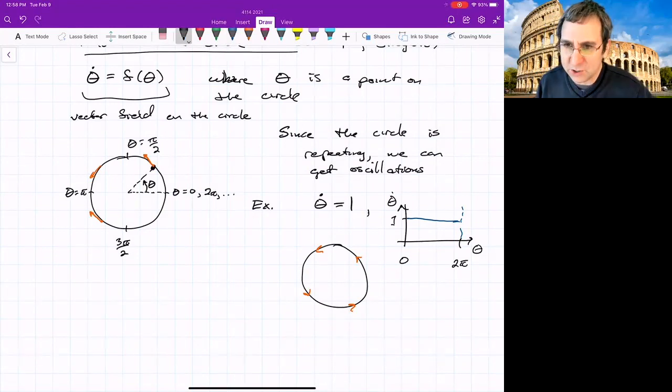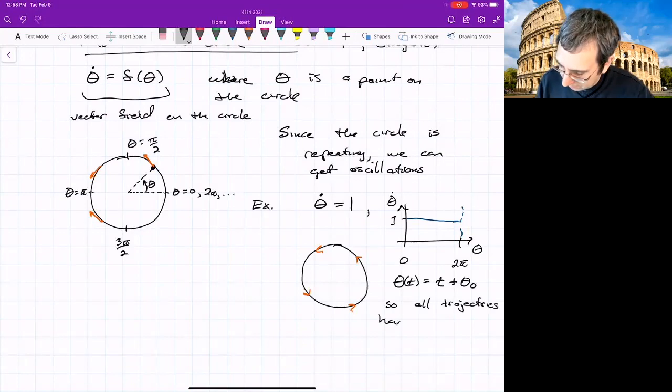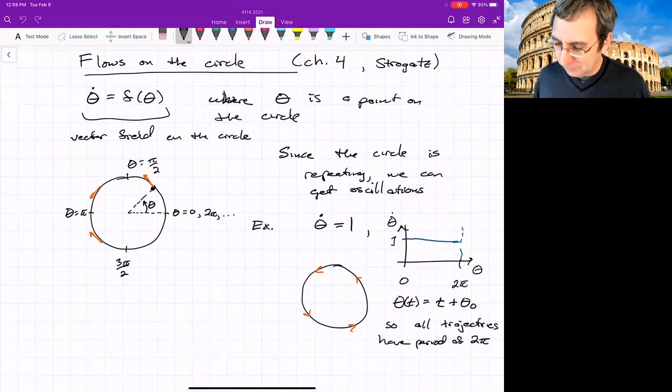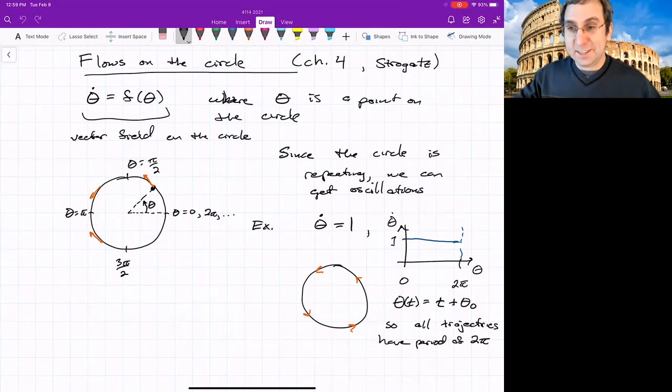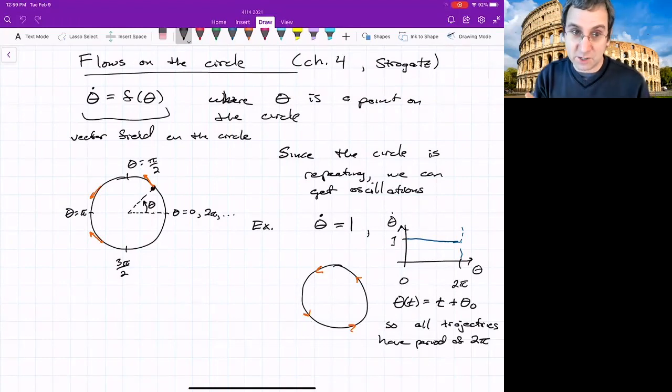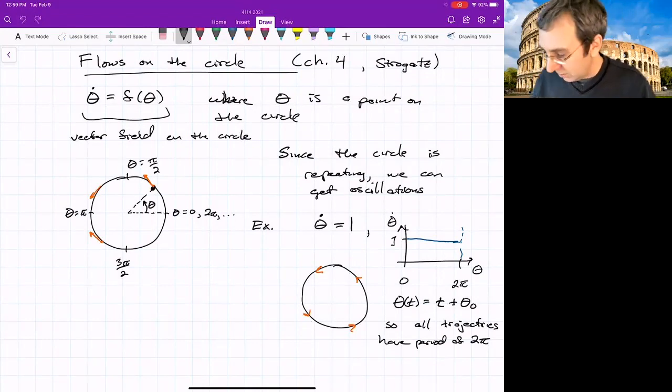In this case, if you were starting from any initial condition, theta as a function of time is t plus theta naught. So all the trajectories have a period of two pi. After a time two pi, you just come back to where you were. That's one of the features of having a vector field on the circle. I guess it also introduces us to the possibility that you can have vector fields on things that aren't the line or the two-dimensional plane. You could have vector fields on the torus or a cylinder or a sphere.